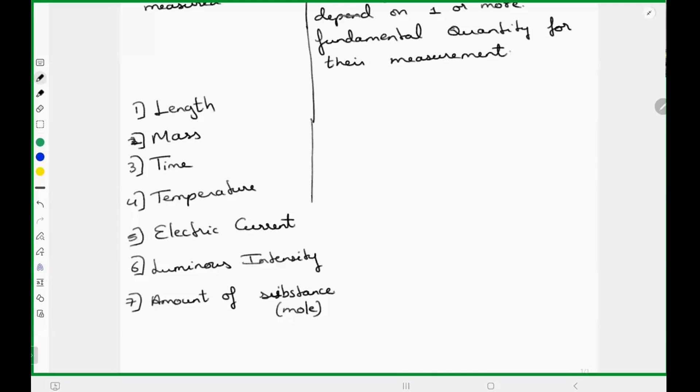So what are the derived quantities? Derived quantities are the quantities which cannot be directly measured. For example, speed, volume, very good, area, velocity, acceleration, force, pressure. What else?